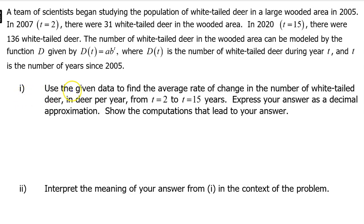Part 1. Use the given data to find the average rate of change in the number of white-tailed deer in deer per year from t equals 2 to t equals 15 years. Express your answer as a decimal approximation. Show the computations that lead to your answer.